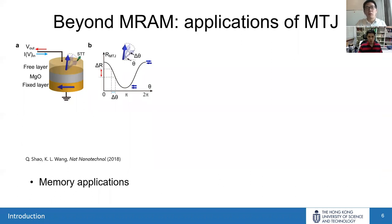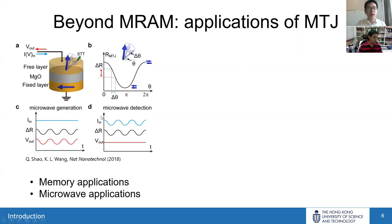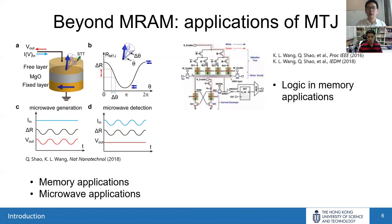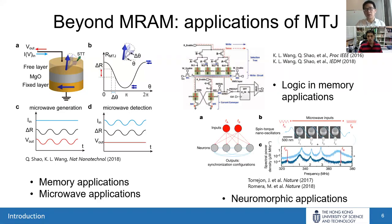MTJs could have more applications beyond MRAM. For example, you can use magnetic tunnel junctions for microwave detection, generation, or amplification. Embedding MTJs into CMOS technology enables logic-in-memory applications. People are also investigating MTJs for neuromorphic applications because they are reminiscent of oscillators, and this oscillator network can mimic brain networks. People have already used them to demonstrate voice recognition and pattern recognition.